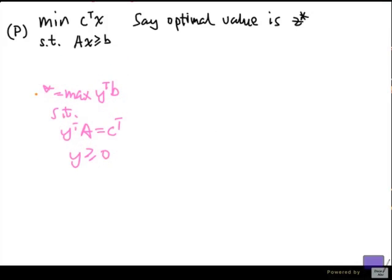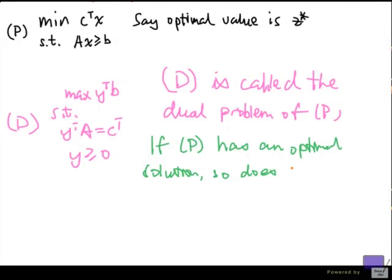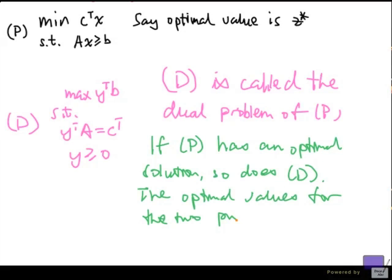We now have a pair of linear programming problems. Let me call this d. So this problem d is called the dual problem of p. And the property that we have is, if p has an optimal solution, so does d. The optimal values for the two problems are equal. So if p has an optimal solution, then d also has an optimal solution. But one is a minimization problem. The other one is a maximization problem.